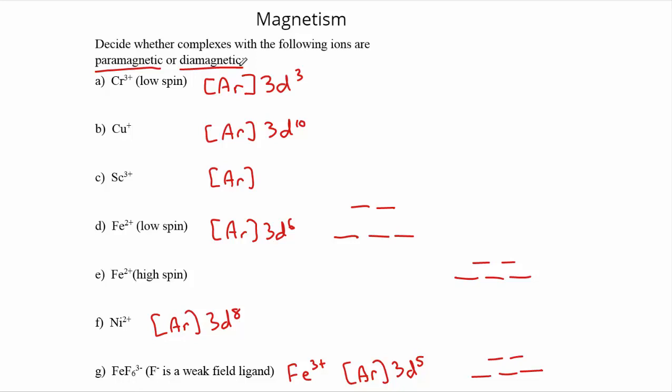Alright, so we want to decide whether the following complexes are paramagnetic or diamagnetic. I copied down all of the electron configurations, they were the same ones we used for the color problems in the last section.